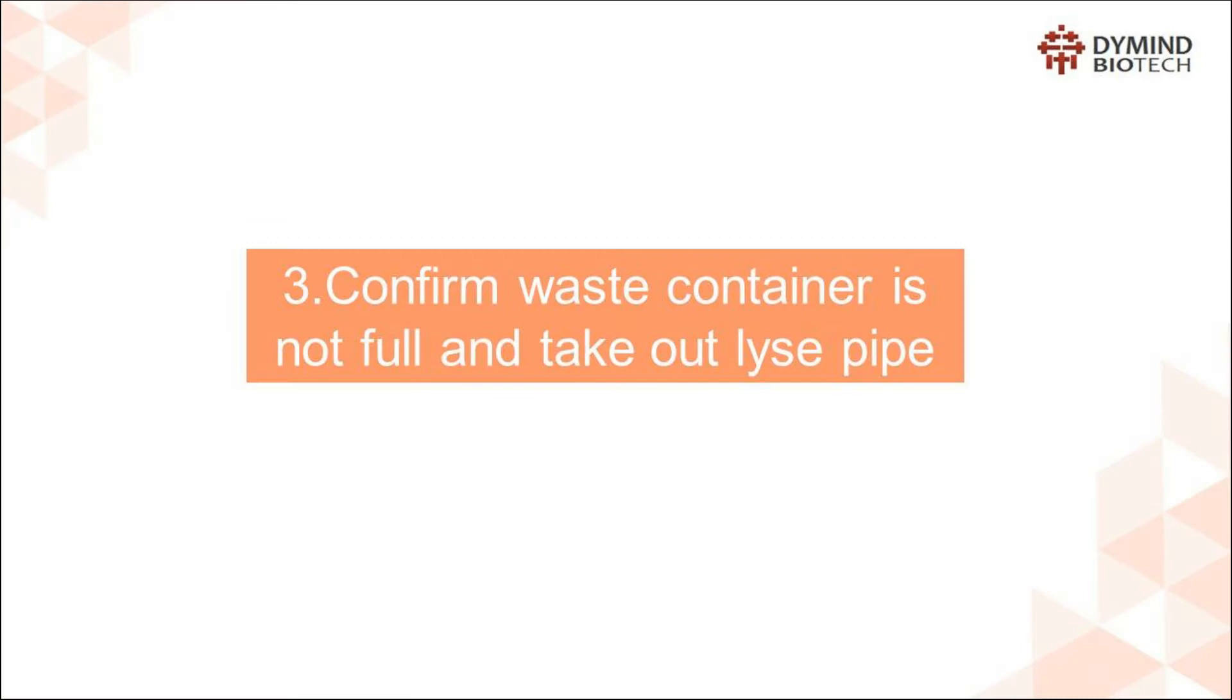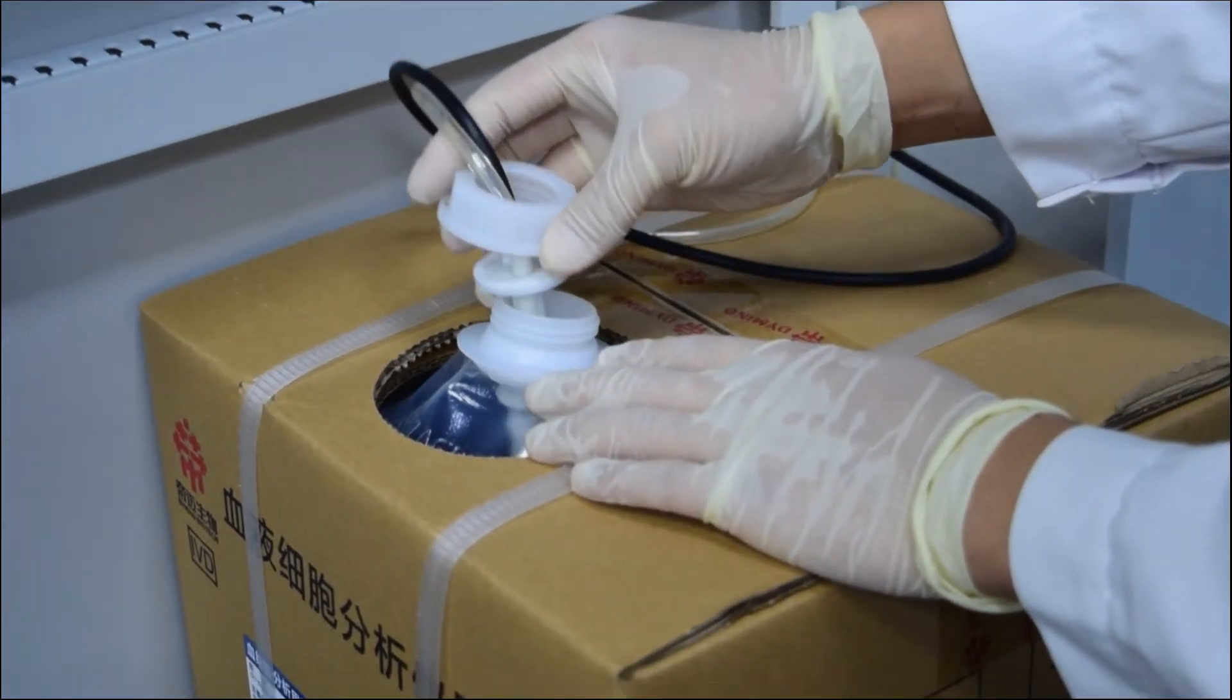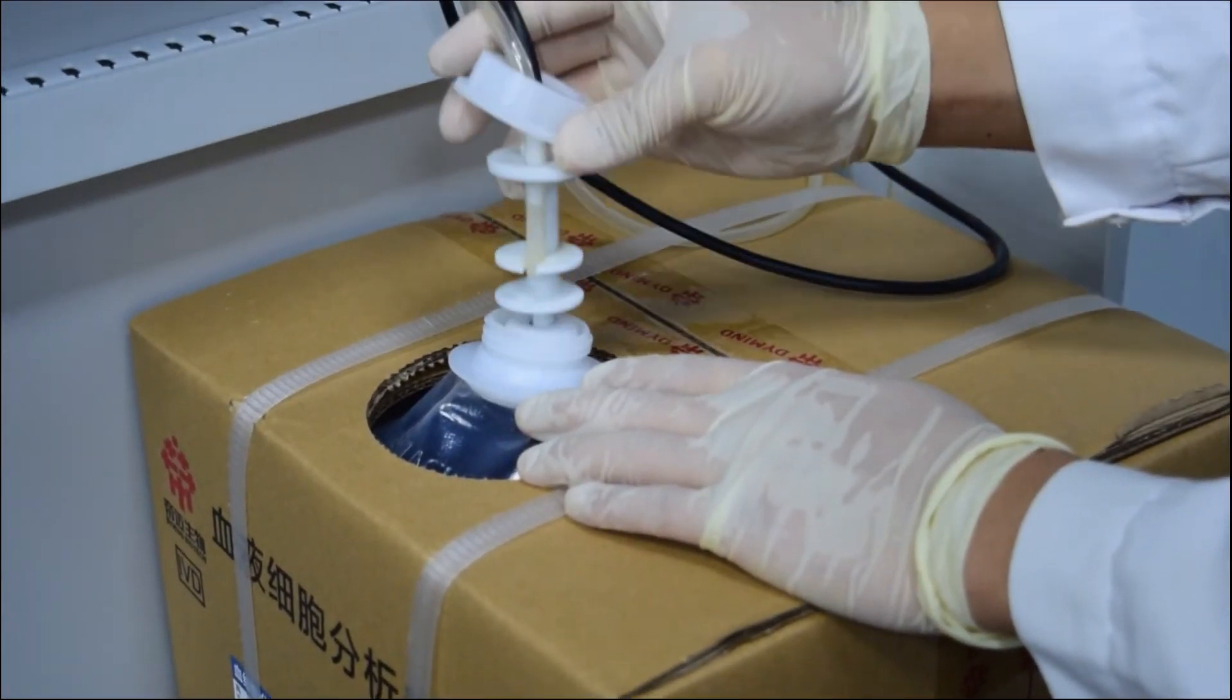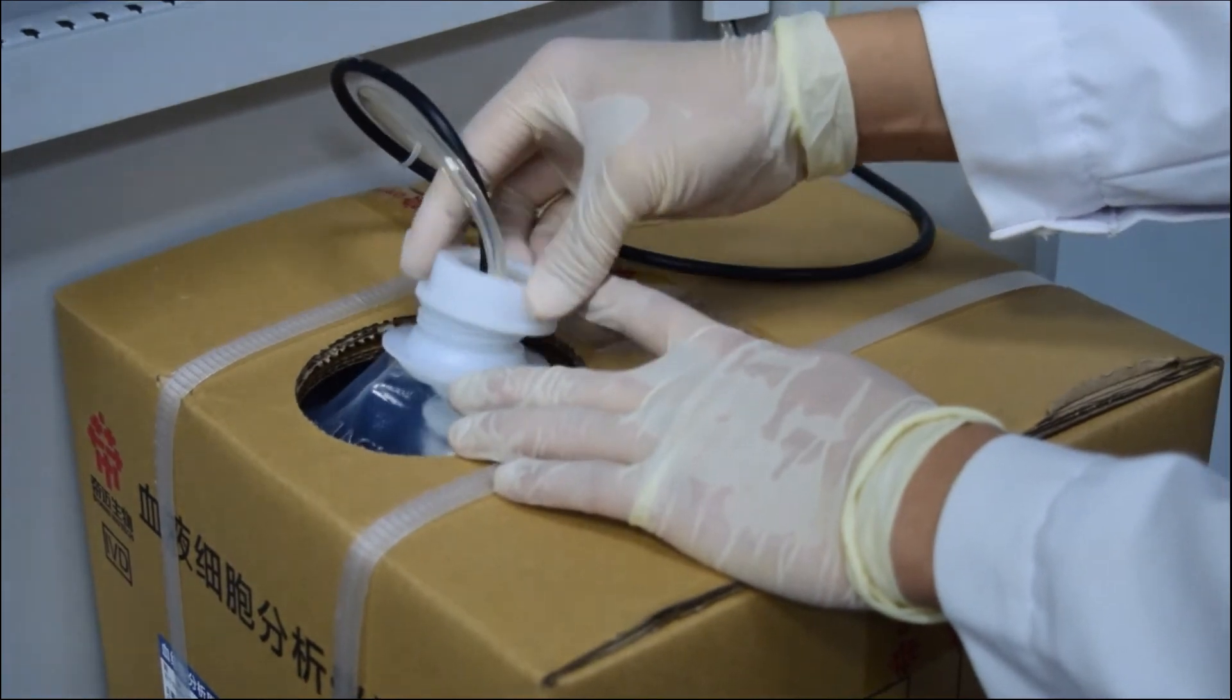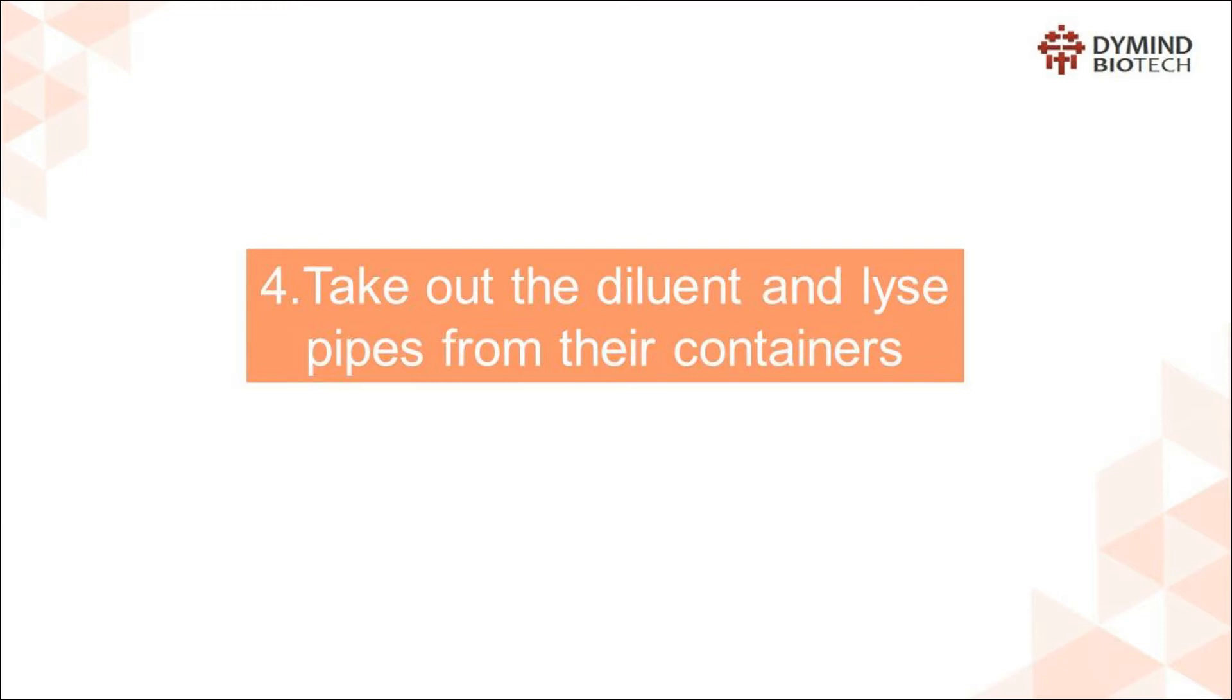Step 3: Confirm waste container is not full and take out lyse pipe. Step 4: Take out the diluent and lyse pipes from their containers.